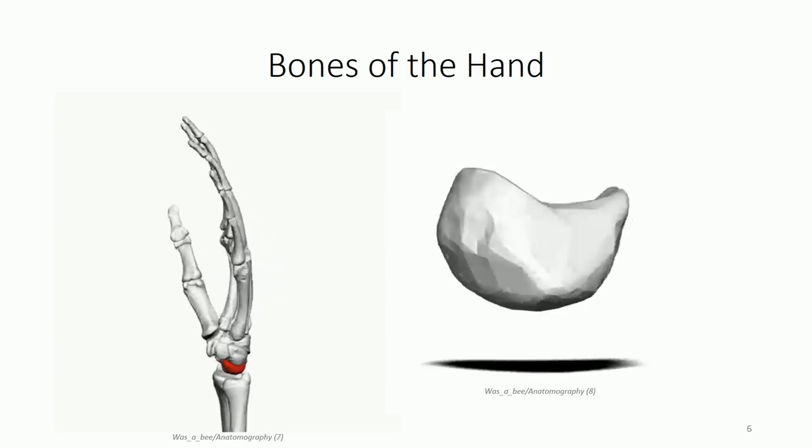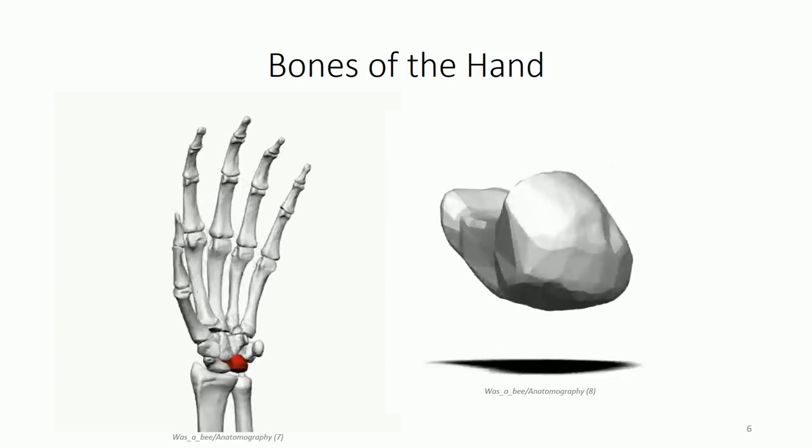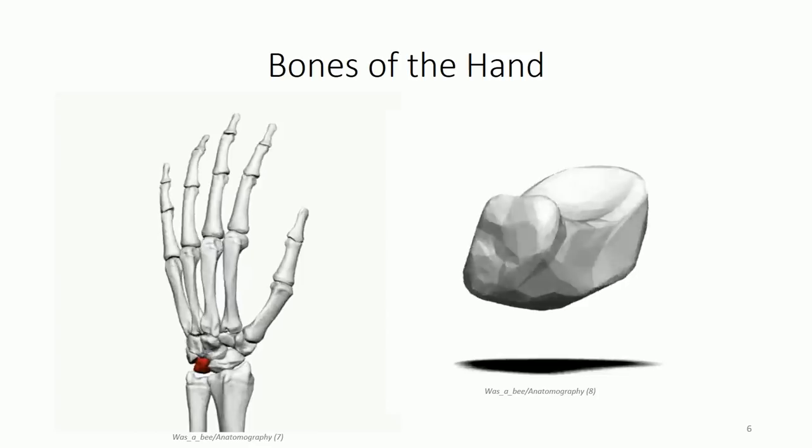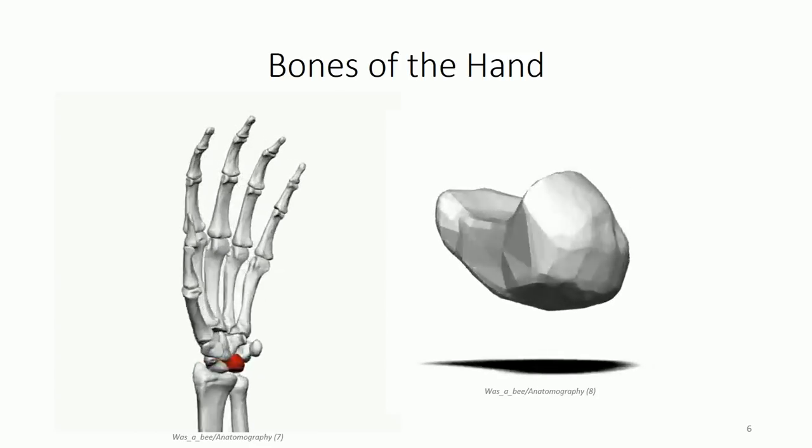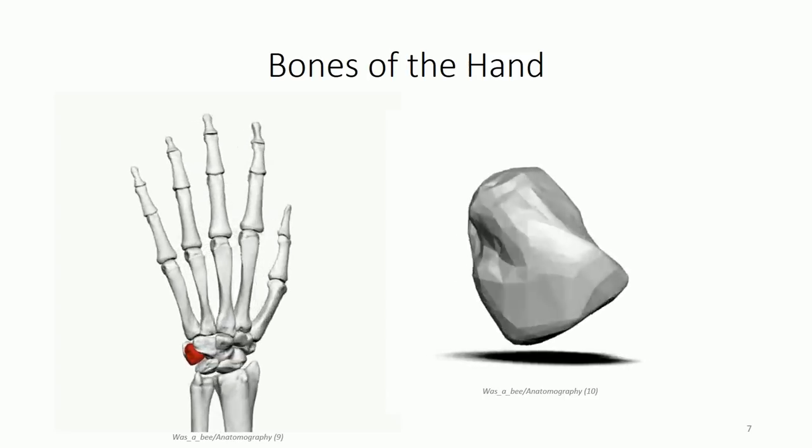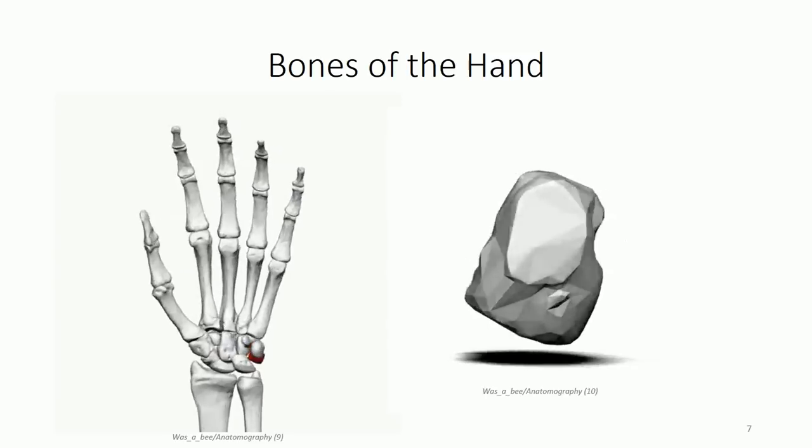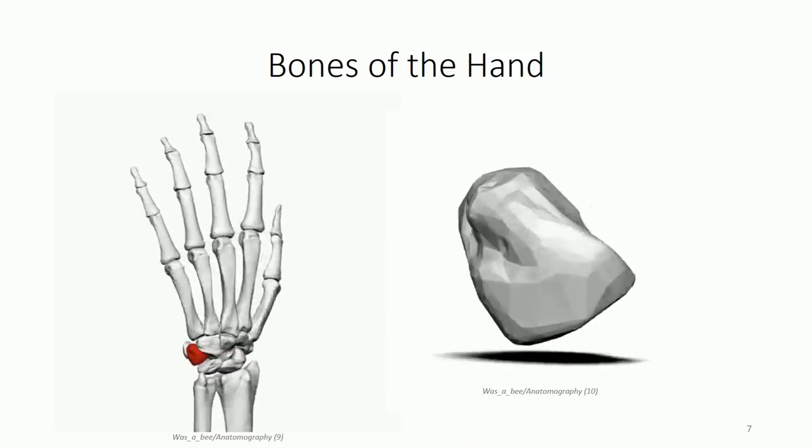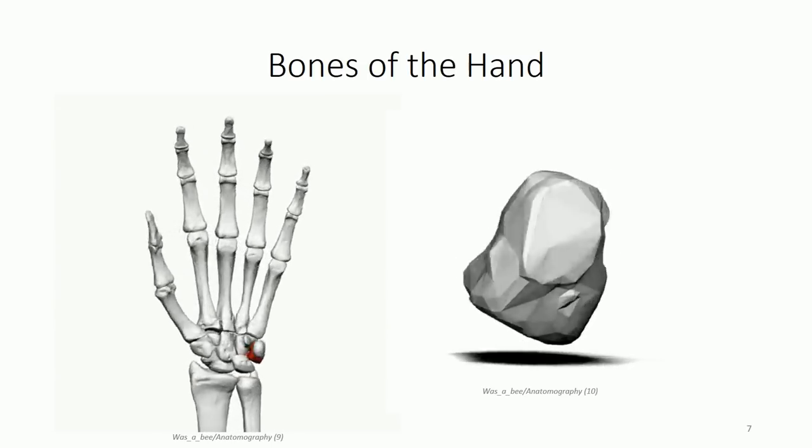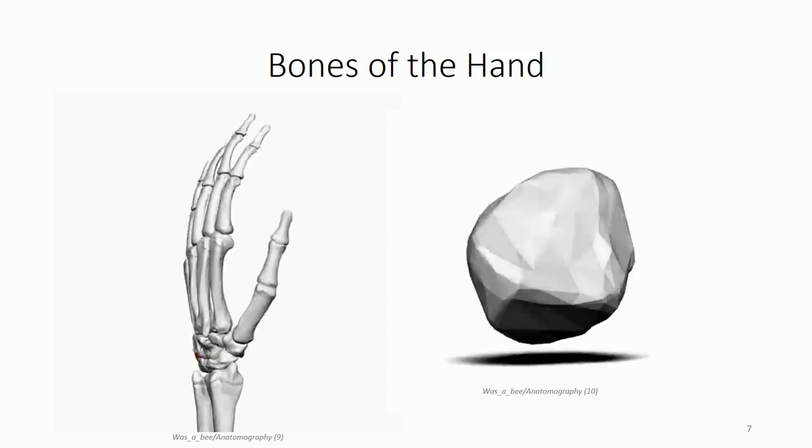The lunate gets its name for its moon-shaped appearance. It lies medial to the scaphoid with which it articulates through the concave surface. The lunate also contributes to the wrist joint, articulating with the triangular disc in a neutral hand position. The triquetrium is named for its pyramidal appearance. Although it's part of the proximal row of carpal bones, it does not actually contribute to the wrist joint in a neutral wrist position.